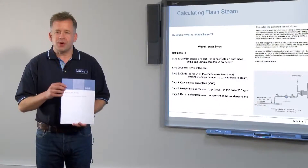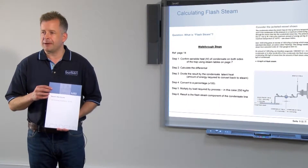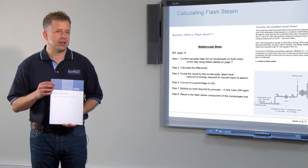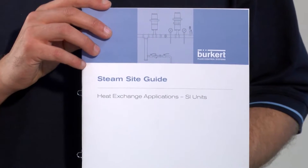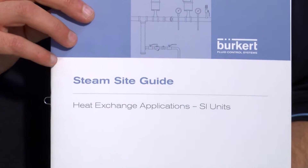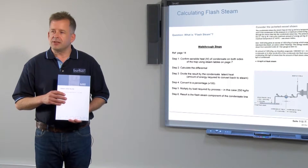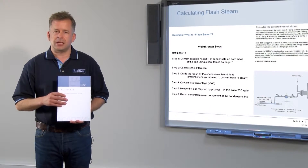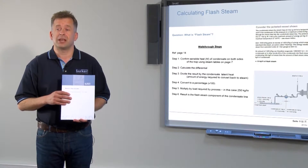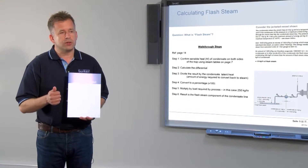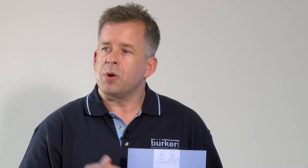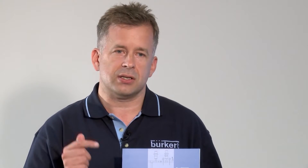This is my favorite part of the course. I'd like to introduce you to the steam site guide. Up to now we've been looking at some of the basics, but with this we'd like to take it up a notch. What we're going to do here is take you through some of the standard steps involved in heat exchange systems. First, we have to look at how much steam you're consuming, so we'll be doing a calculation based on that. Once you have the steam consumption rate, you can look at things like sizing the steam pipework.